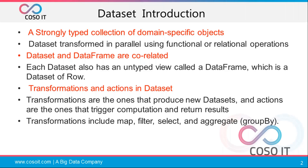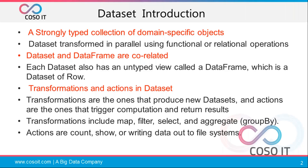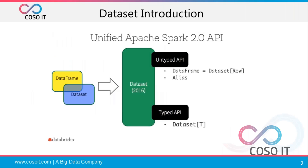Transformations include map, filter, select, and aggregate. Aggregate is used for group by operations — for example, if you want to compute a group-by average, you use group by, then aggregate, and inside the aggregate you use average on a particular column, just like in SQL. Actions include count, show schema information, show data, or writing data to a file system. The program looks similar to DataFrame, but the internal workings are different.